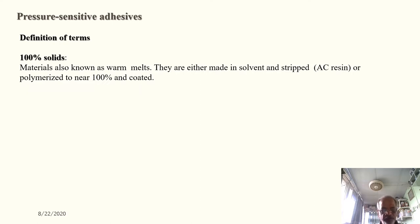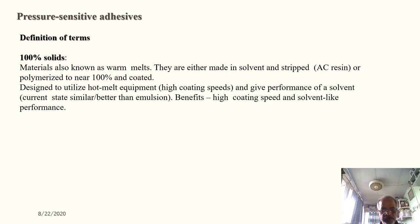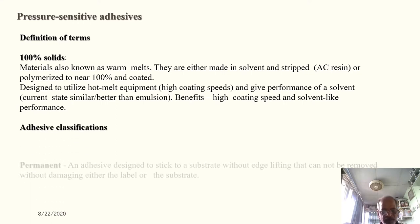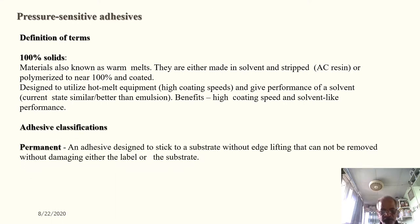100% solids materials, also known as foam melts, are either made in solvent or polymerized to nearly 100% solids and coated. They are designed to utilize hot melt equipment, achieve high coating speeds, and deliver performance similar to or better than solvent-based systems. Key benefits include high coating speeds and solvent-like performance.